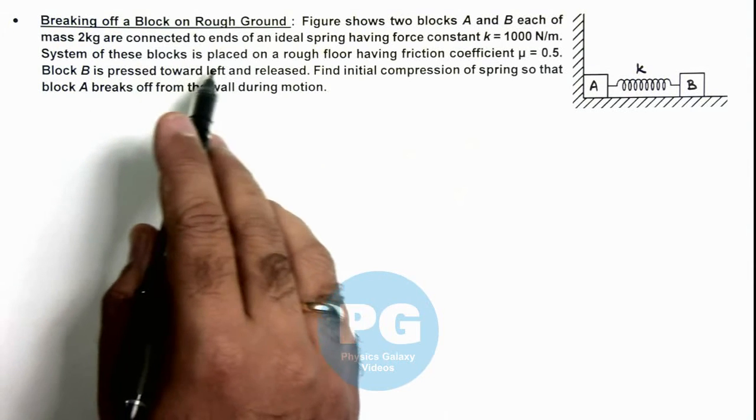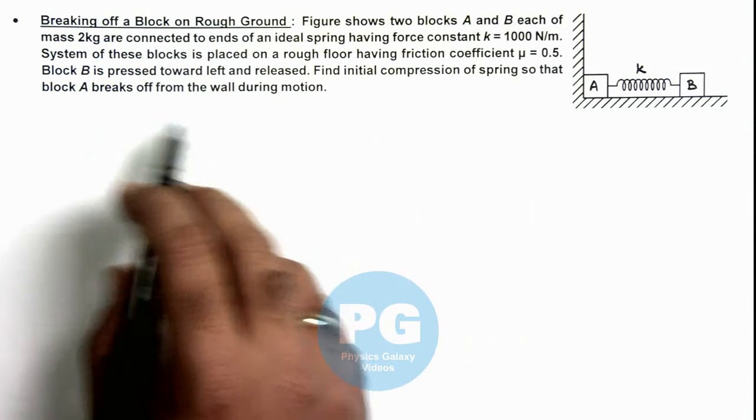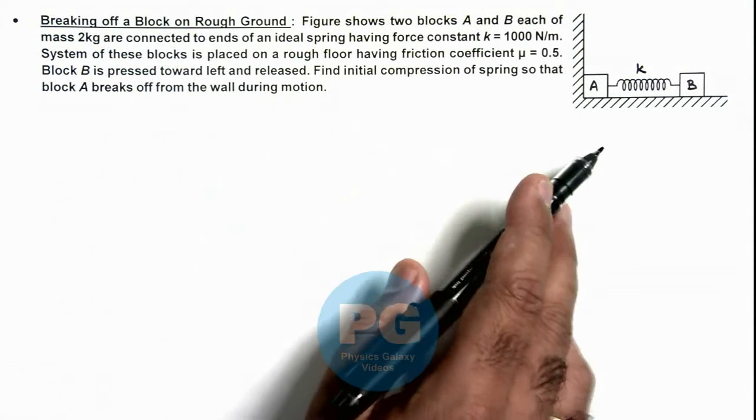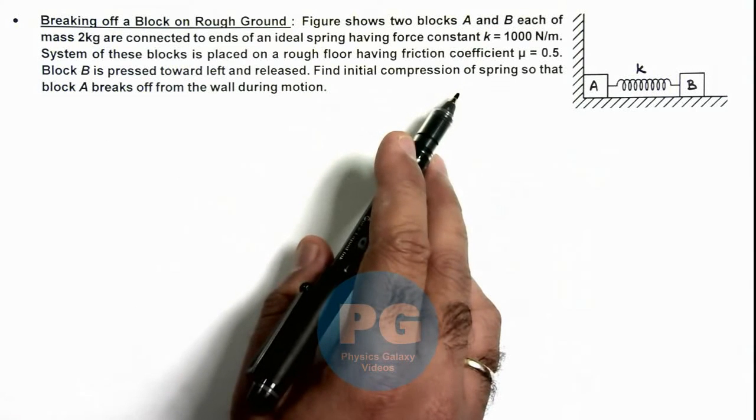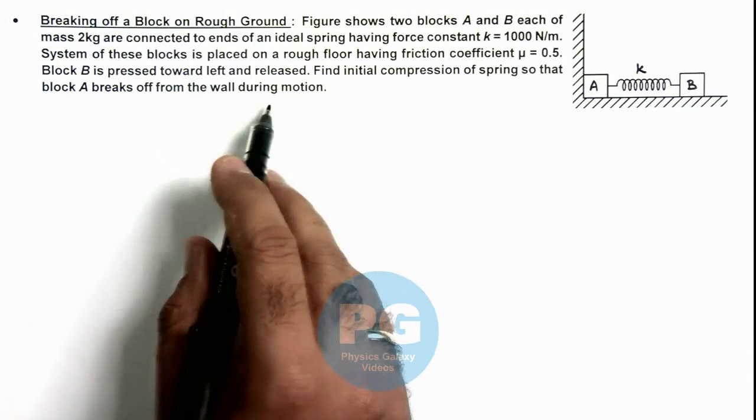And the system of these blocks is placed on a rough floor having friction coefficient 0.5. And now block B is pressed toward left and released. We are required to find the initial compression of spring so that block A breaks off from the wall during motion.